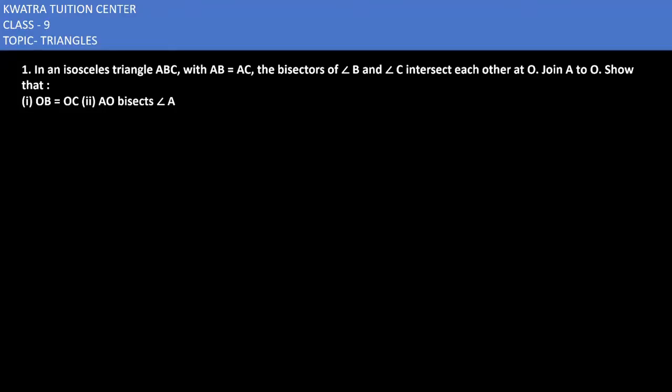Join A to O, show that OB is equal to OC, AO bisector of angle A. So here we have a triangle with three vertices ABC and we're given AB which is equal to AC. Bisector of B and bisector of C will meet at point O.